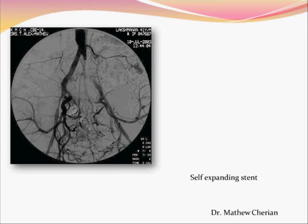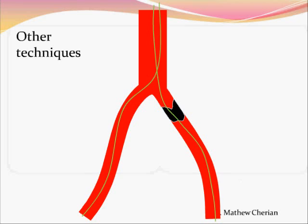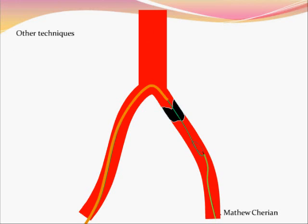This is an example of a chronic occlusion of the common iliac artery on the left side, and this is the end result after angioplasty and stenting. You could do the same procedure by going through the retrograde route, or you could sometimes convert an antegrade into a retrograde procedure by snaring the catheter and pulling it out.